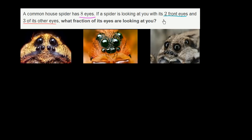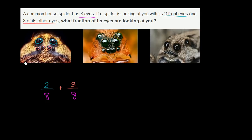So it's looking at you with two of its eight eyes. The two front eyes represent what fraction of the eyes? Well, it represents two of the eight eyes. You have eight eyes, and the two front eyes — one and two of the eight. And it says it's also looking at us with three of its other eyes, so three of the eight eyes — that one, that one, and that one.